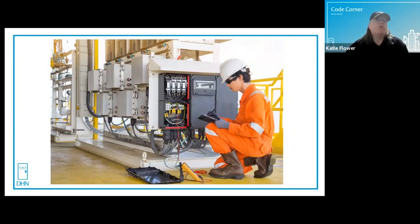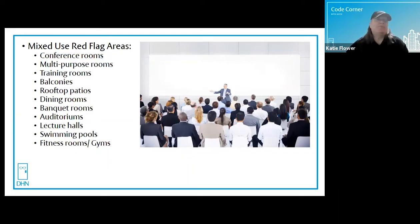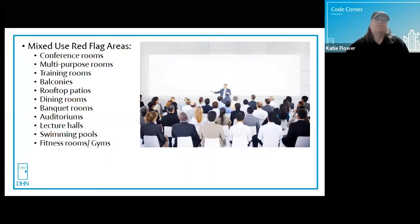We also have areas that are mixed use within a Group B business occupancy. For example, you could have a conference room, multipurpose room, or a training room. If there are 50 or more people in that space, it's considered Group A assembly and exit devices would be required along your path of egress, including the exits from the story.